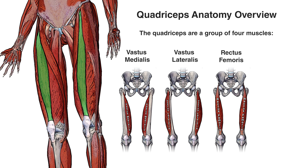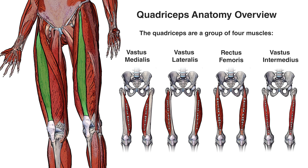Located in the middle we have the rectus femoris muscle, which is special because it's the only quadriceps muscle that's biarticular — meaning it crosses two joints. It crosses both the knee joint and the hip joint, allowing it to have actions at both joints, whereas the other quadriceps muscles only have actions at the knee joint. Our last quadriceps muscle is the vastus intermedius, which we can't see here because it is deep to the rectus femoris — the rectus femoris covers it up.